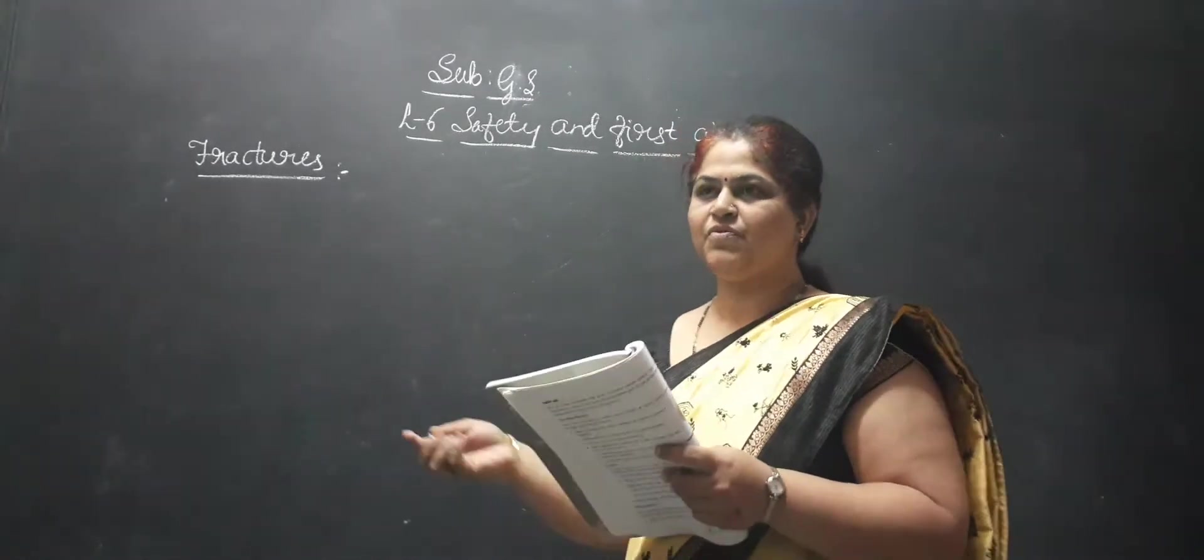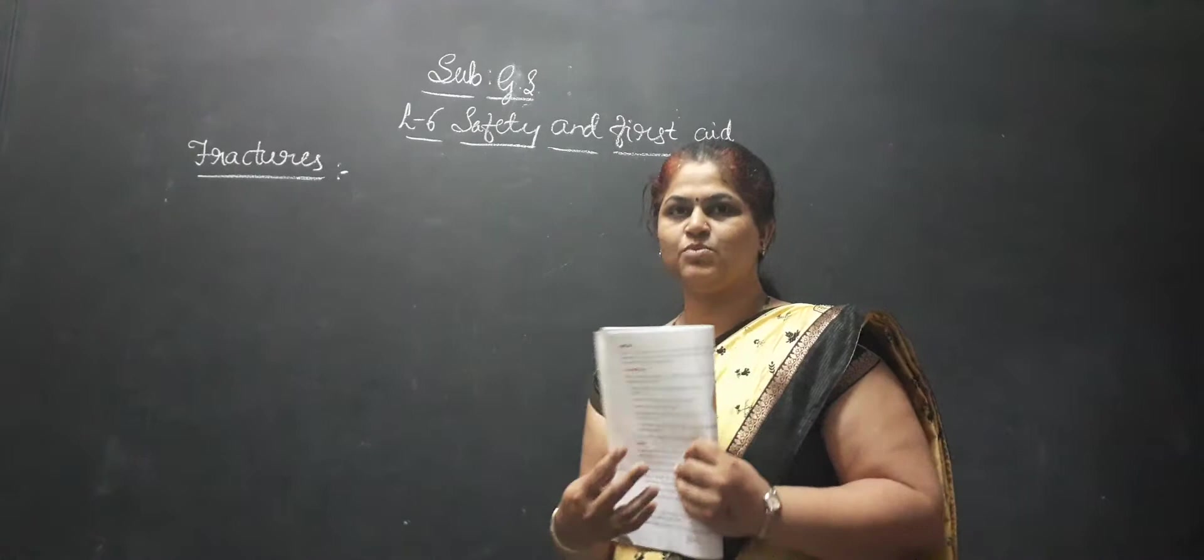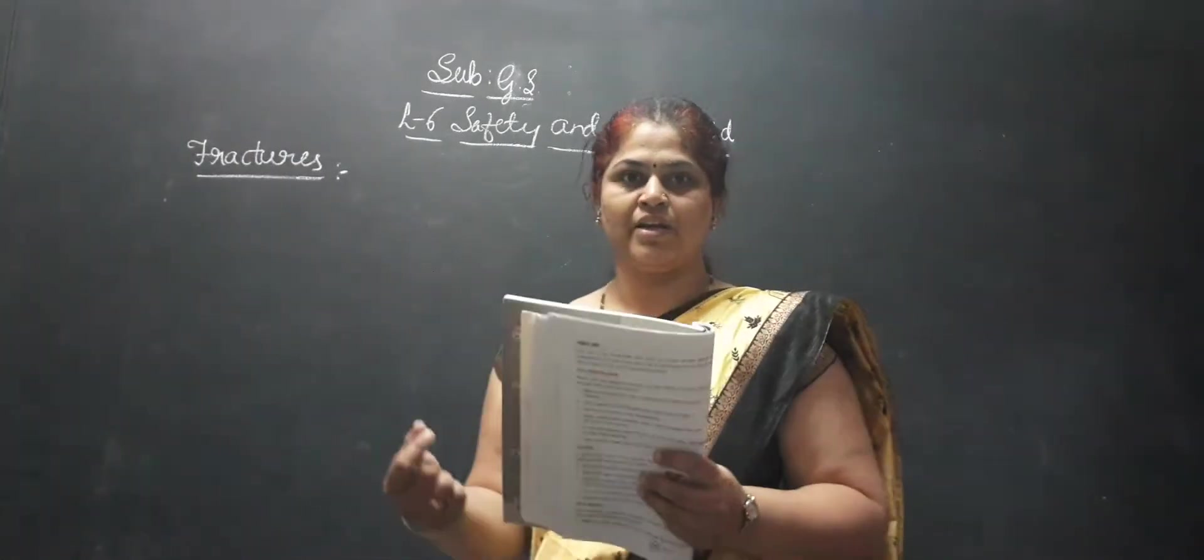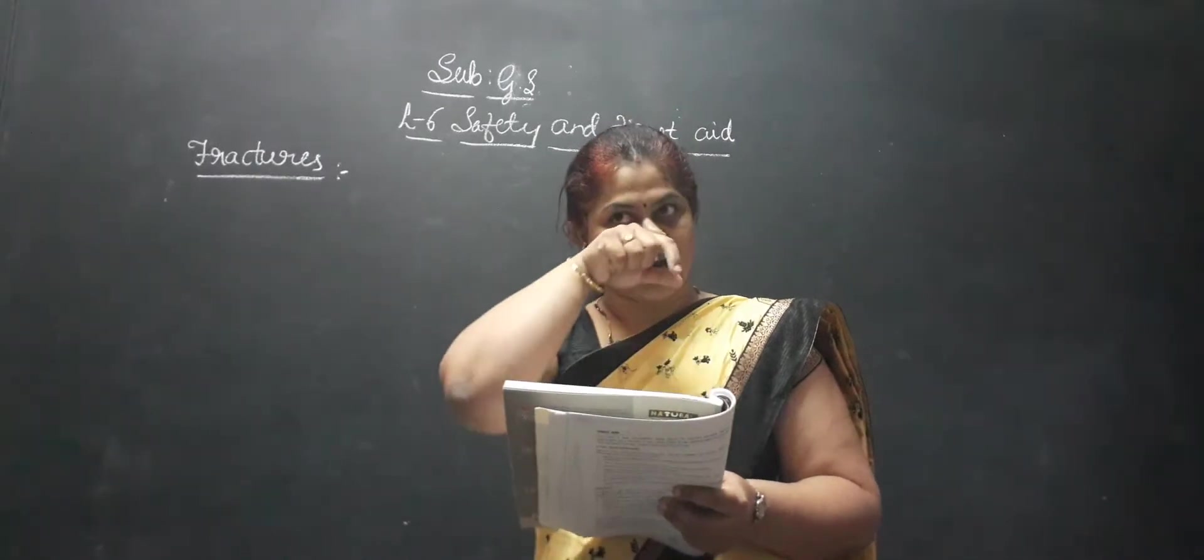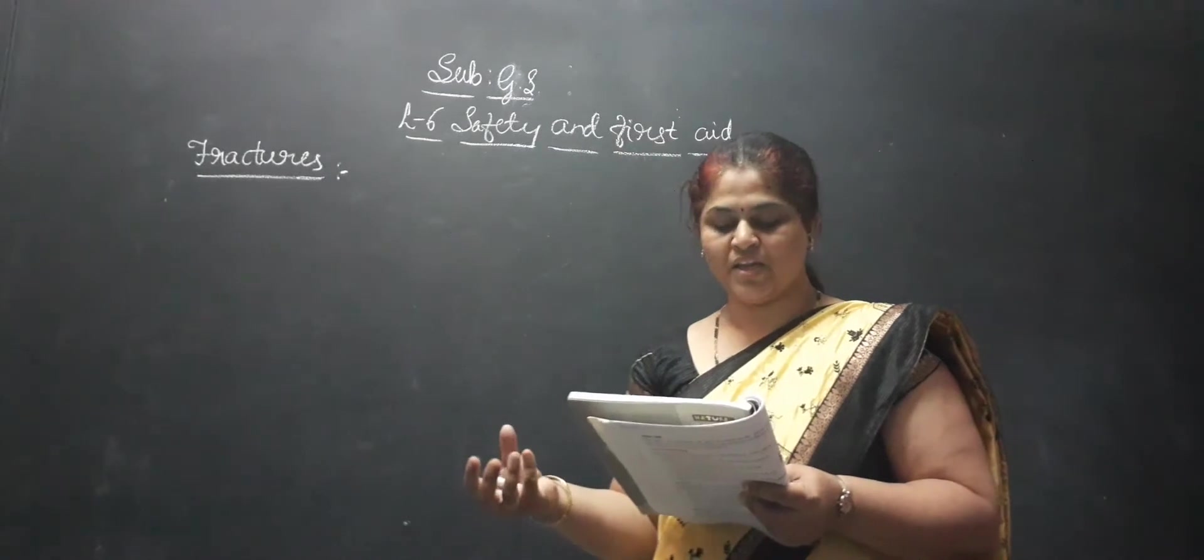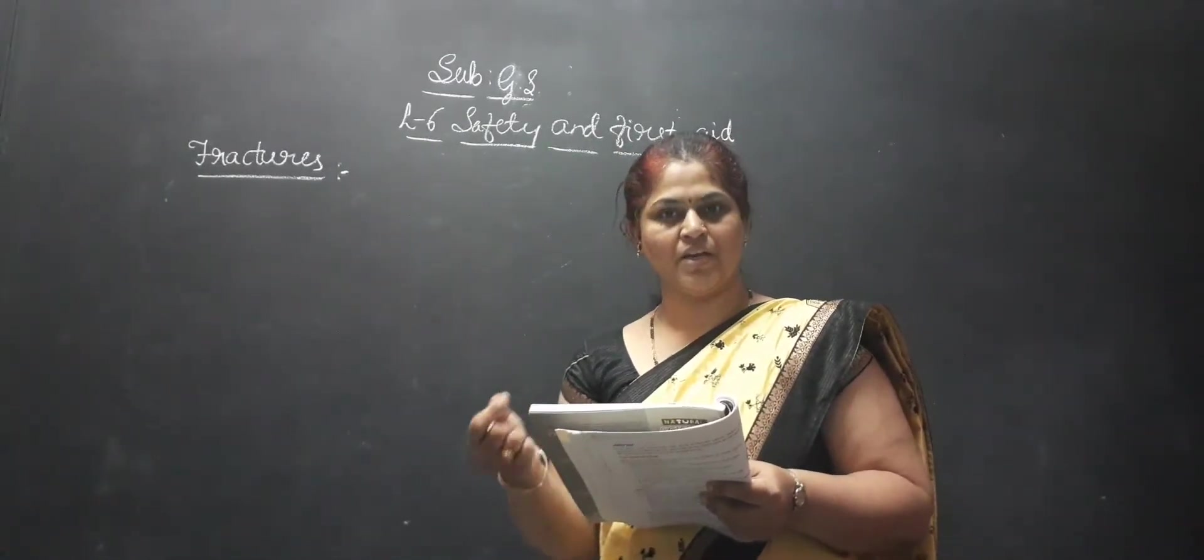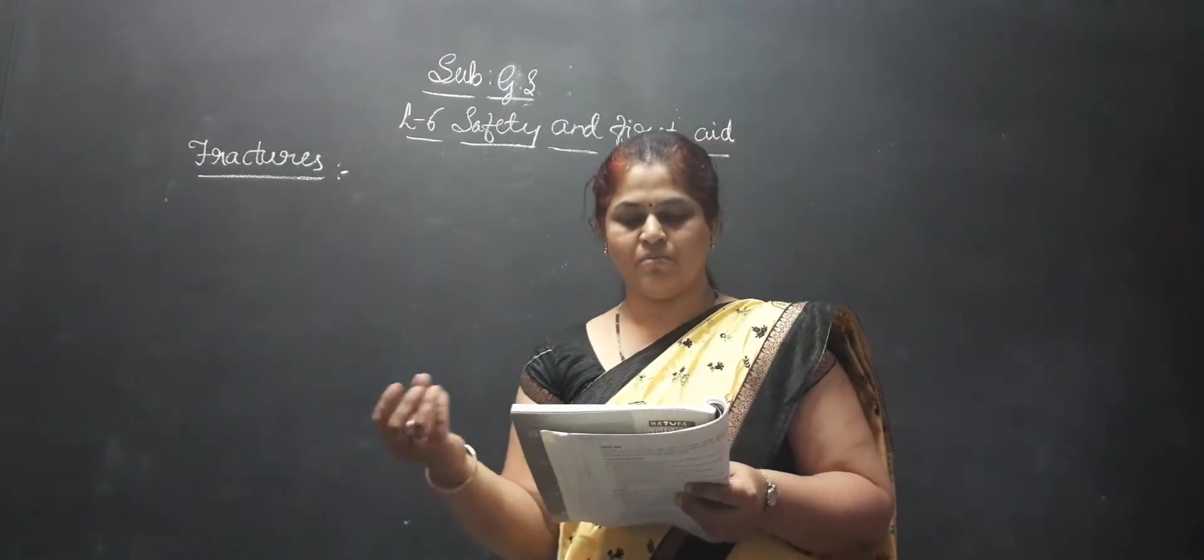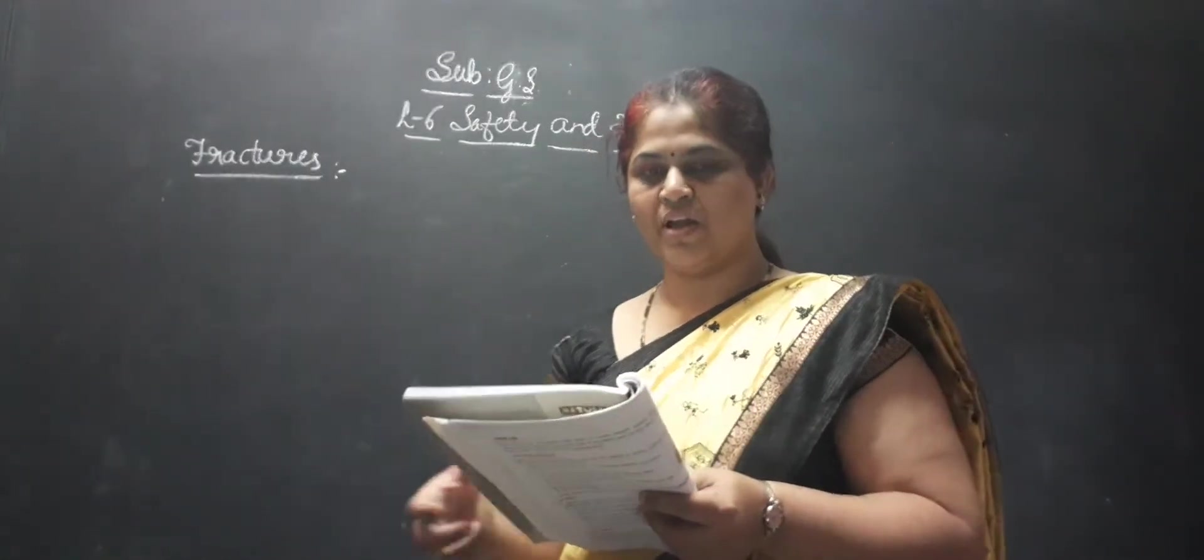Suppose if you are going somewhere on the vehicle, at that time some accidents will happen and you will get some hurt for hand, ankle or wrist. At that time it comes as swelling. So if it gets hurt inside it will get swelling, or if the bone is broken, it is a fracture.